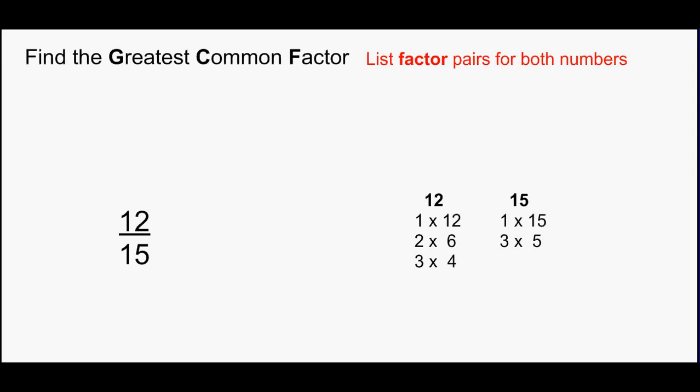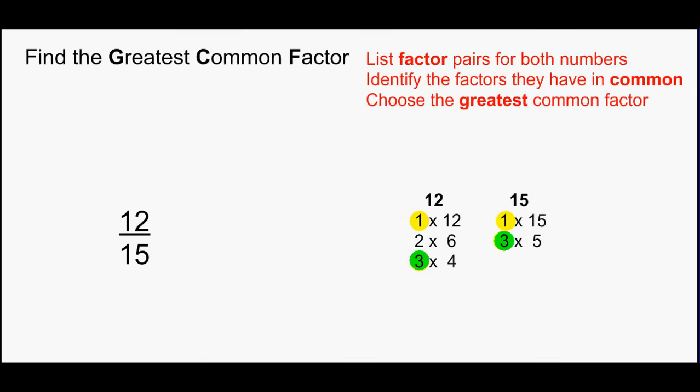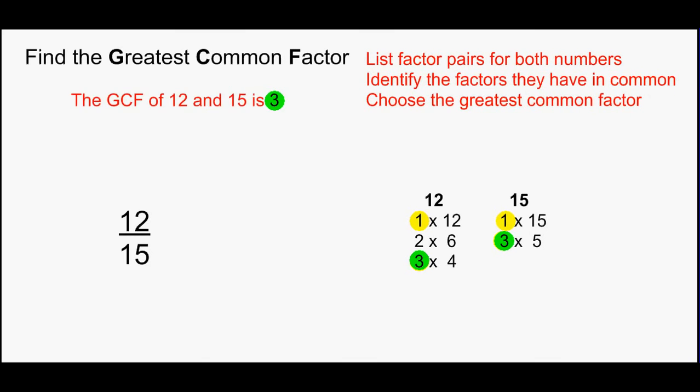Let's begin with the fraction 12 fifteenths. Before we can think of reducing it, we must first find the greatest common factor for the numbers 12 and 15. First, we'll list the factor pairs for both numbers. Identify the factors they have in common. Choose the greatest common factor. The greatest common factor of 12 and 15 is 3.